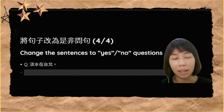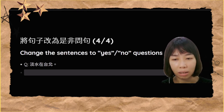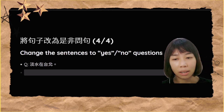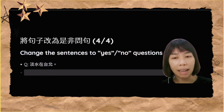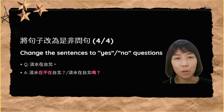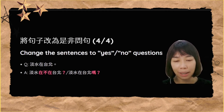最后一个问题是：淡水在台北。好，跟老师想一想，答案一样有两个哦。第一个答案：淡水在不在台北？第二个是：淡水在台北吗？好，这个是第二部分。